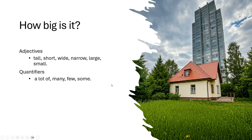You can also use adjectives and quantifiers to describe how big the building is that you're talking or writing about. In the picture here, we have a very large, very tall building at the back, and a very short, smaller building at the front. Adjectives like tall, short, wide, narrow, large, and small are very useful in this situation. We could also use quantifiers — how many of these things are there — such as a lot of, many, few, or some.